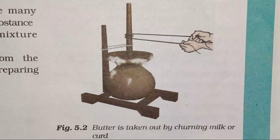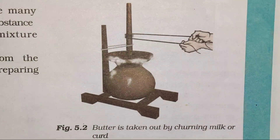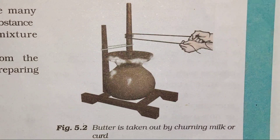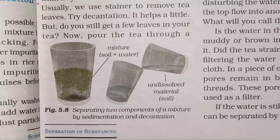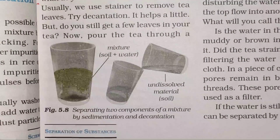Our next important diagram is from Chapter 5: Separation of Substances. The diagram is from page number 35, Figure number 5.2 — the churning method: butter is taken out by churning milk or curd. You can also practice this method. Next, from this chapter, page number 39, Figure number 5.8: Separating Two Components of a Mixture by Sedimentation and Decantation.